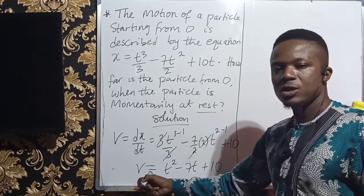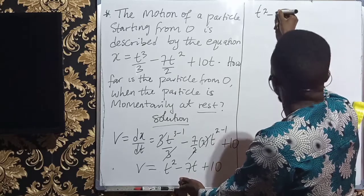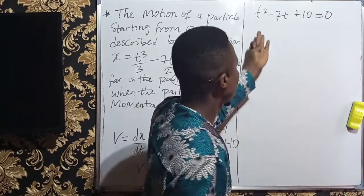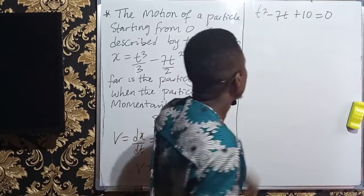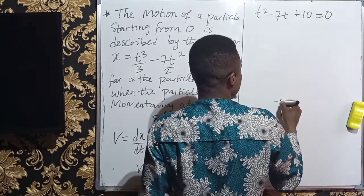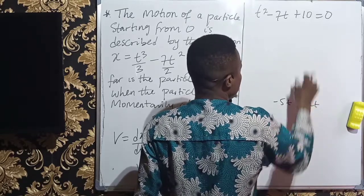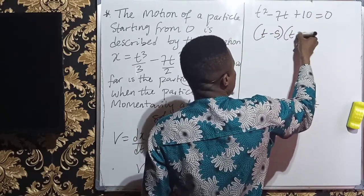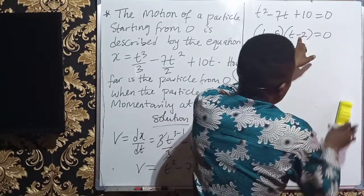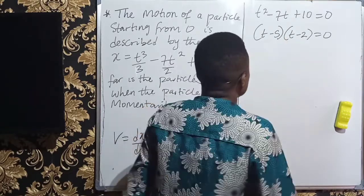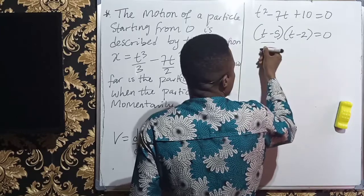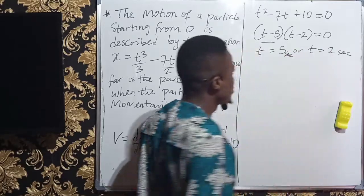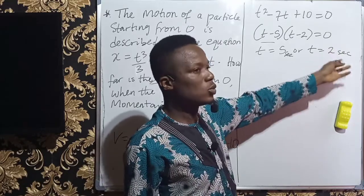But since it's starting from rest, our v is equal to 0. Therefore, t squared minus 7t plus 10 is equal to 0. So we shall solve this quadratic equation. We think of two numbers which are times to get 10, when we add we get minus 7, and the numbers should be minus 5t and minus 2t. So we have t minus 5 into t minus 2 equals 0. So either t is equal to 5 or t is equal to 2 seconds.